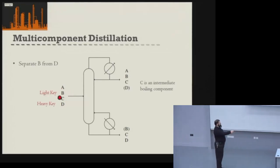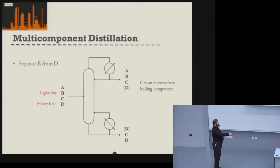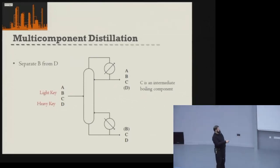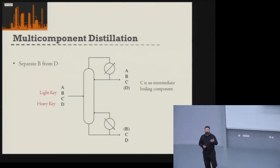If we're separating B from D, the majority of B goes to the top, and the majority of A also goes to the top because it has higher vapor pressure than B. The majority of D goes to the bottom. Component C is an intermediate boiling component with a relative volatility between B and D, so it splits partly between the top and bottom of the column. The shortcut method allows you to quantify these separations.